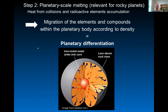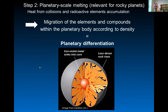The second step is planetary scale melting, which is most relevant for rocky planets. Because we have a lot of very energetic collisions, we accumulate a great deal of heat, and we also accumulate a lot of radioactive elements within those objects. Eventually we have large-scale melting of the body and a planetary scale magma ocean. Once we have that, the elements start to migrate according to their density within the planetary body — that is the planetary differentiation.